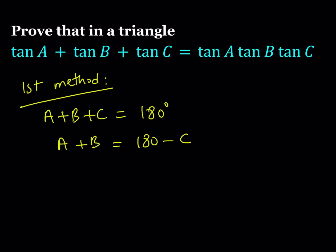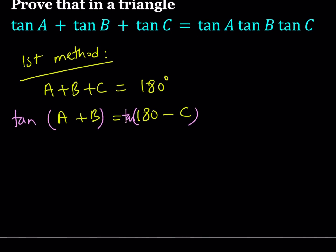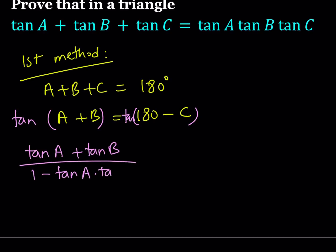I have this equality: A plus B is equal to 180 minus C. I'm going to take the tangent of both sides. What happens if you tangent both sides? You get tangent of (A plus B) equals tangent of (180 minus C). Let's go ahead and expand the left-hand side using the sum formula: we have tangent A plus tangent B, divided by 1 minus tangent A times tangent B.